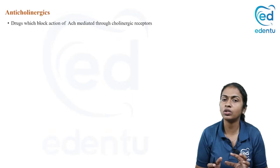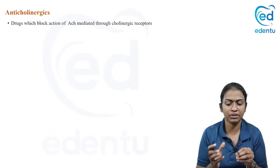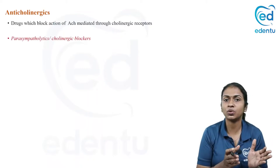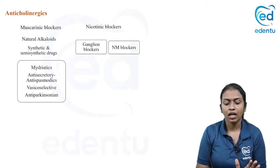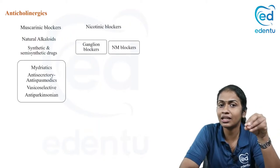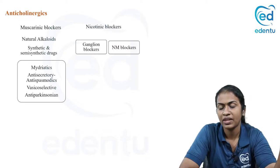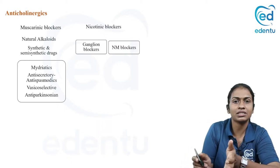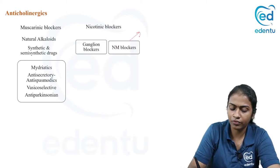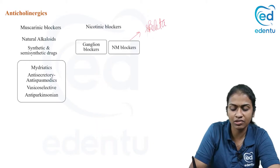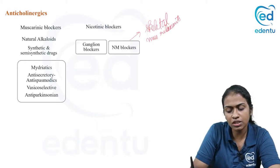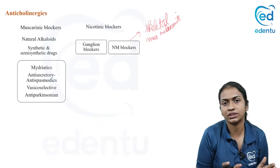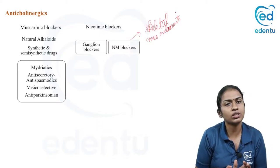Anticholinergic drugs block the action of acetylcholine mediated through cholinergic receptors. Conventionally we call them parasympatholytics or cholinergic blockers. The muscarinic blockers are what we call anticholinergics. The nicotinic blockers are called either ganglion blockers or neuromuscular blockers. We are concentrating on the muscarinic blockers.